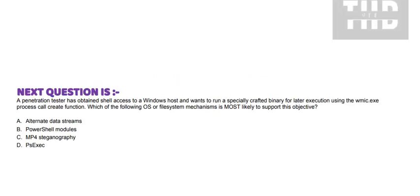Today's question is: A penetration tester has obtained shell access to a Windows host and wants to run a specially crafted binary for later execution using the wmic.exe process call create function. Which of the following OS or file system mechanisms is most likely to support this objective? Option A: Alternate data streams. Option B: PowerShell modules. Option C: MPFS steganography. Option D: PSEXEC.